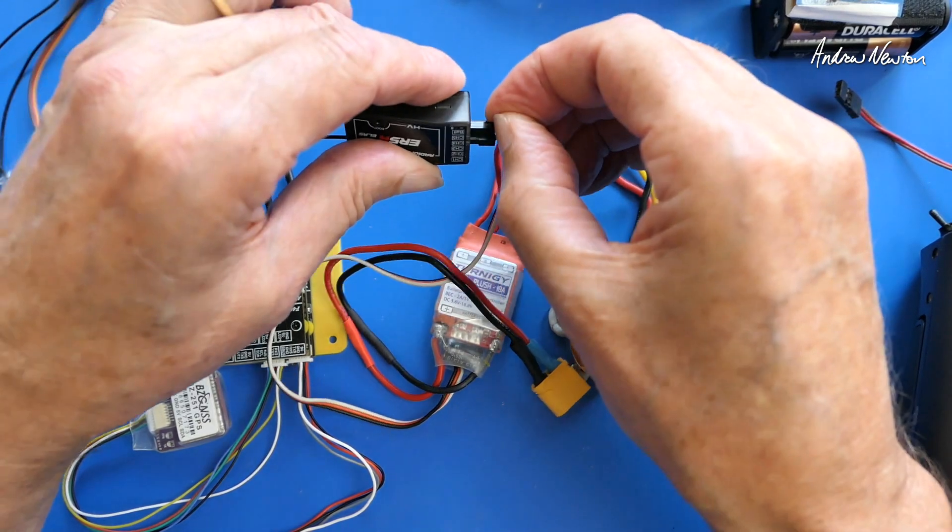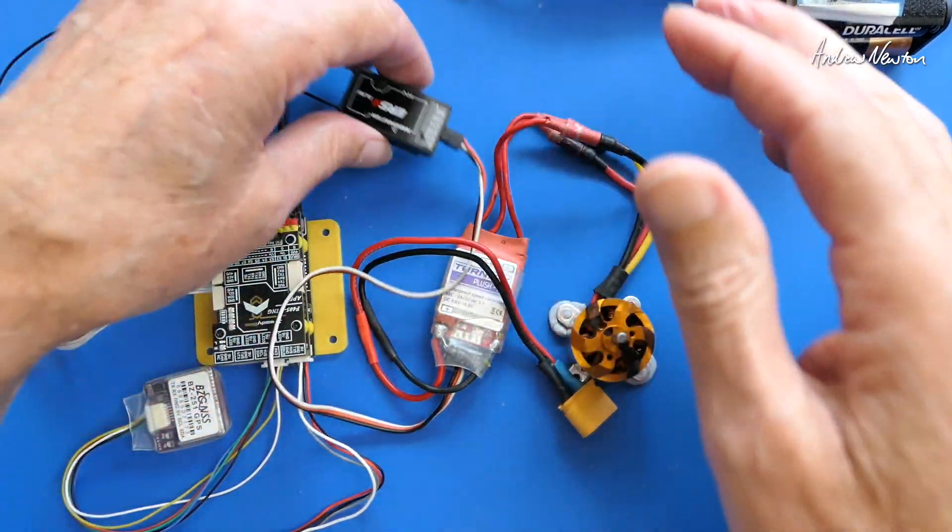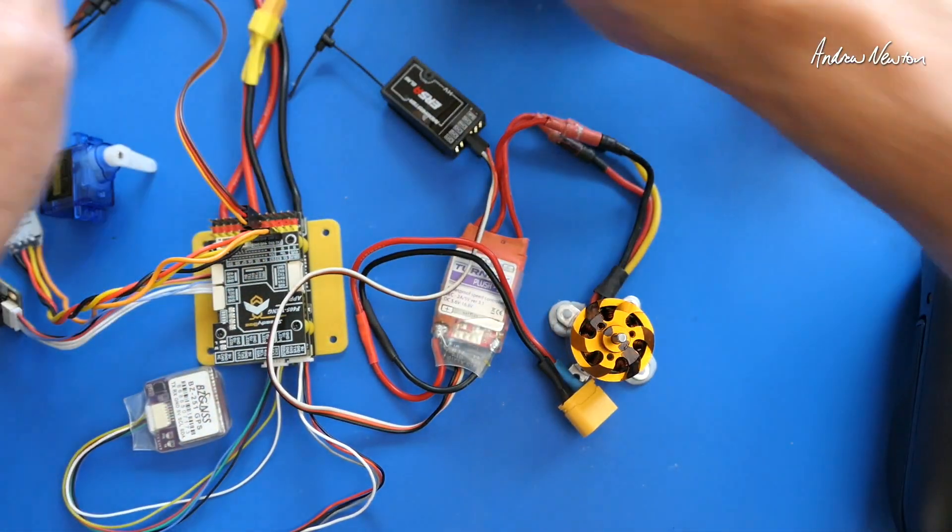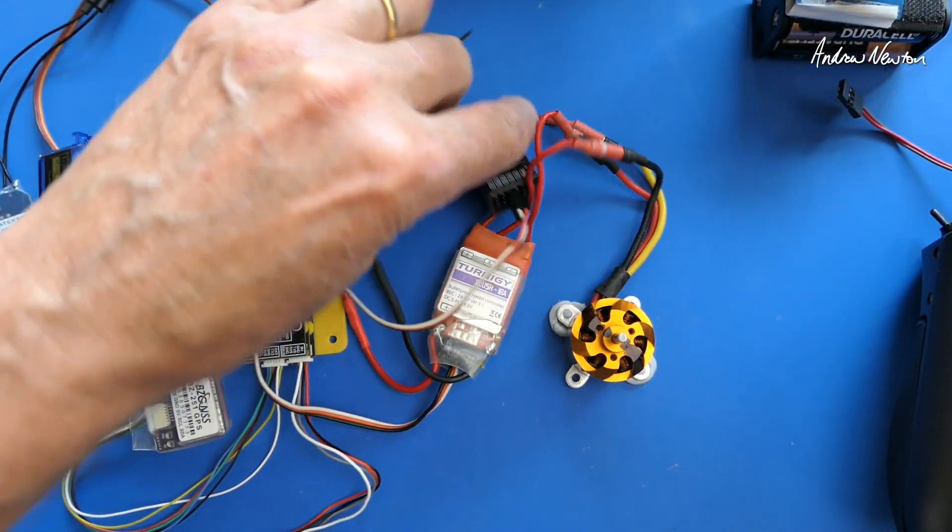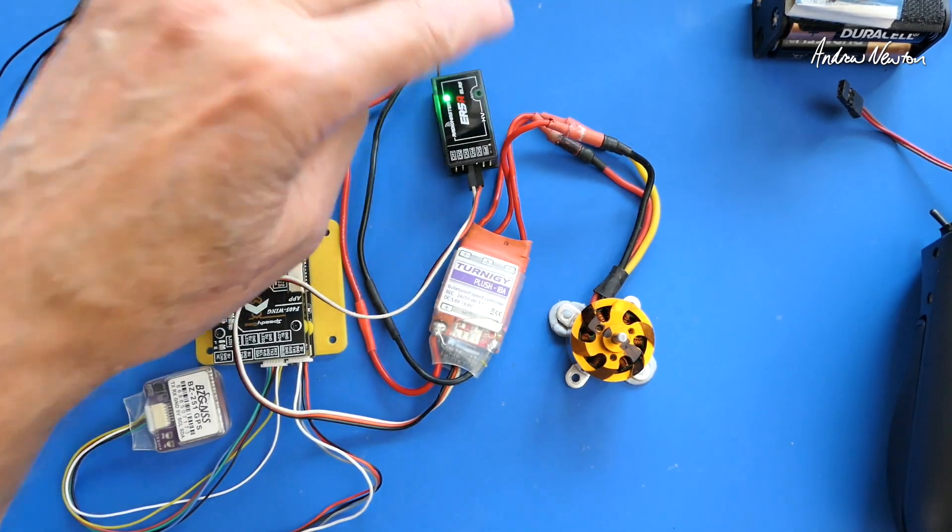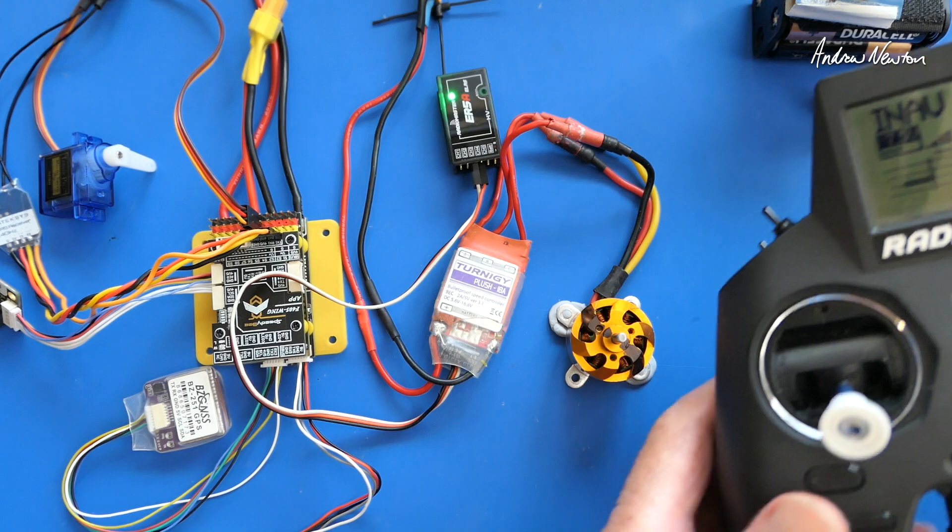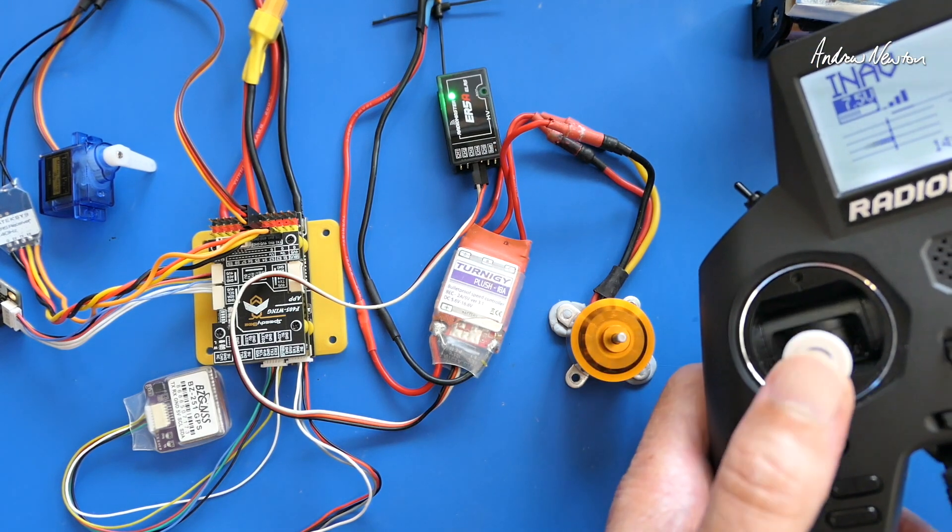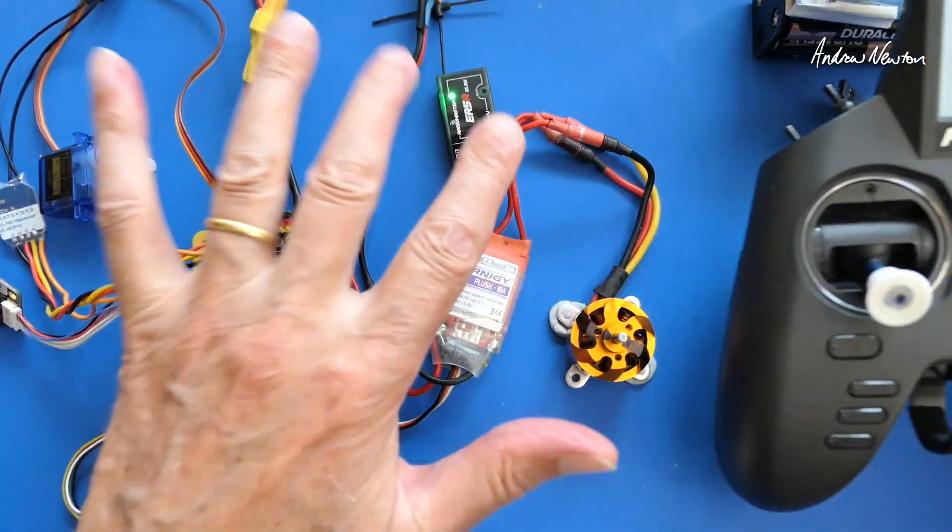Let's try it. I have a serial ExpressLRS receiver connected to the board, but I have a PWM receiver here that I can test with. So let's connect up the motor, and there we go. That proves that the ESC and the motor and all the wiring is intact and is going to work.